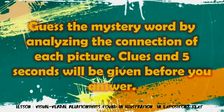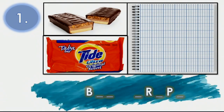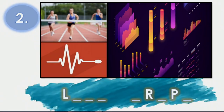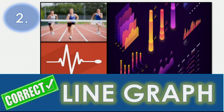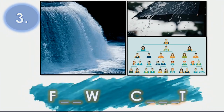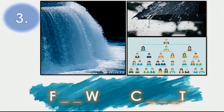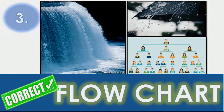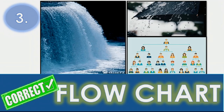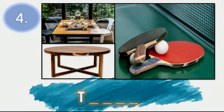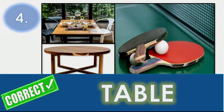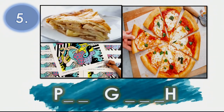Number one — the correct answer is bar graph. Number two — the correct answer is line graph. Number three — the correct answer is flow chart. Number four — the correct answer is table. And for the last number, the correct answer is pie graph.